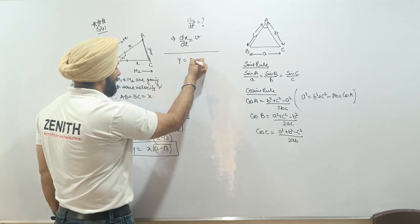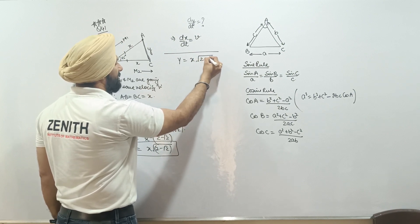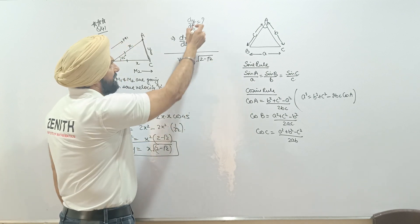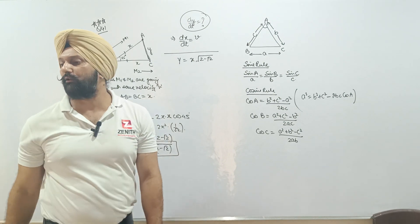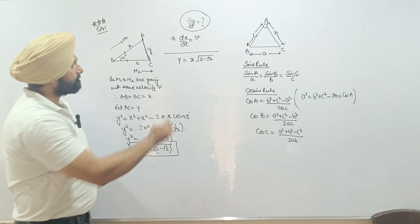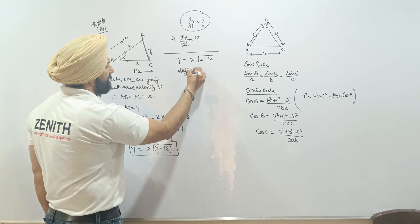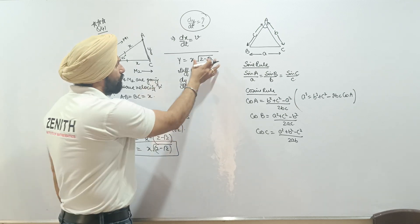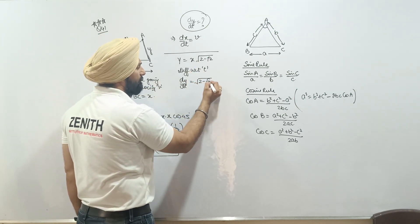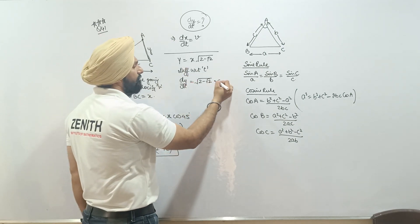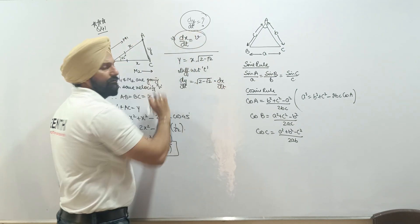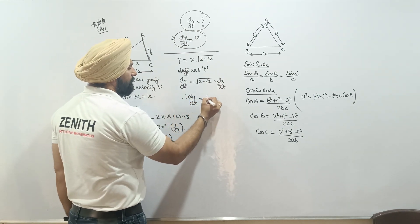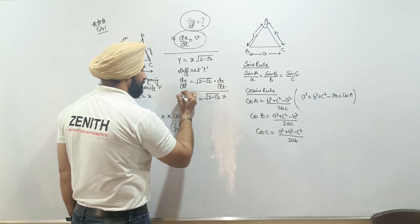y equals x times the square root of (2 minus root 2). This constant part remains as is. Differentiating with respect to t: dy dt equals the constant under root (2 minus root 2) times dx dt. Since dx dt equals v, the final answer is dy dt equals v times the square root of (2 minus root 2).